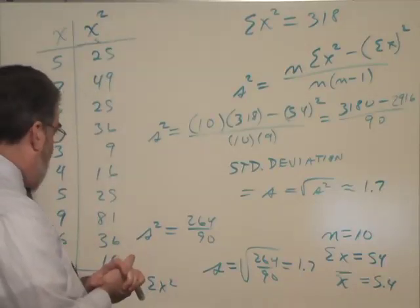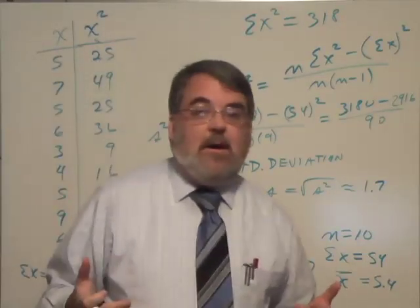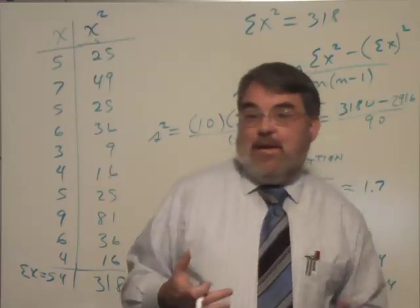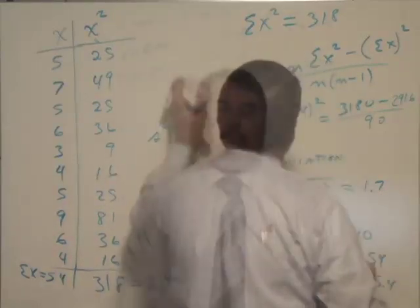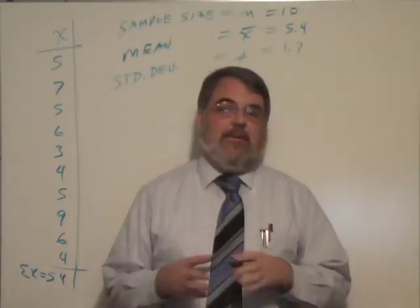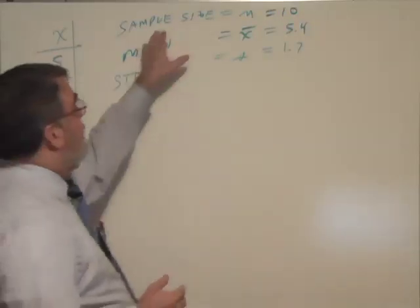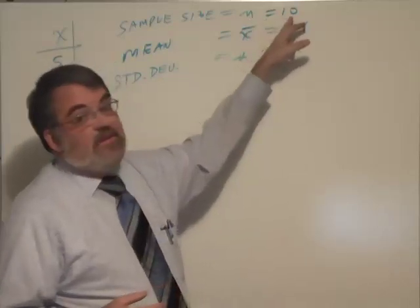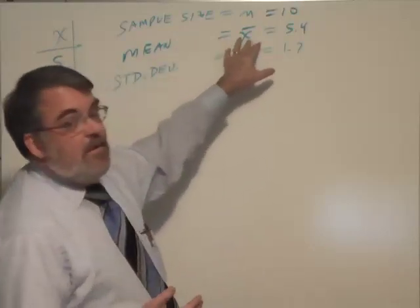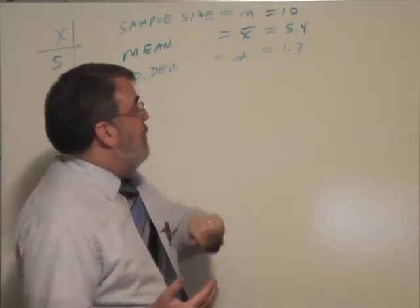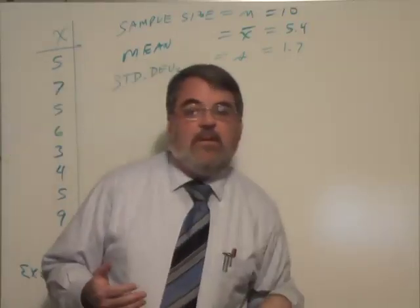All right. Now I'm going to do some erasing. So I have some room on the board to talk about what the standard deviation number means. And that's a key thing here. I have summarized our summary statistics for this set of data. Sample size, again, is represented by letter N. And for this data, there were 10 pieces of data and N was equal to 10. The mean is called X bar. It's the average. It's 5.4. And the standard deviation is S, which is 1.7.